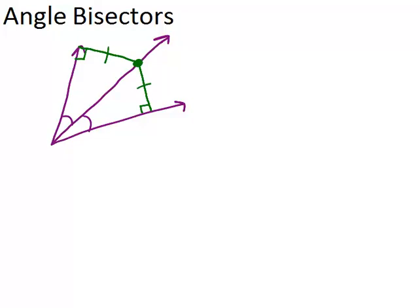And it will be the same no matter where you pick this point. So if you pick a point down here and try to figure out the shortest distance from this point to the bottom part of the angle, which would have to be a perpendicular line, and same thing over here — these two line segments will be congruent.